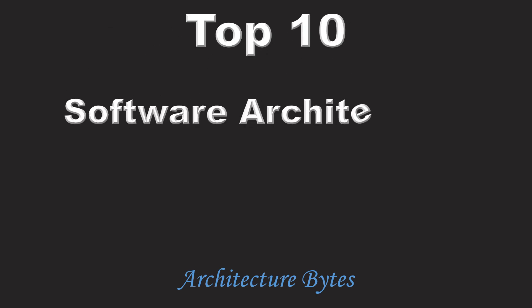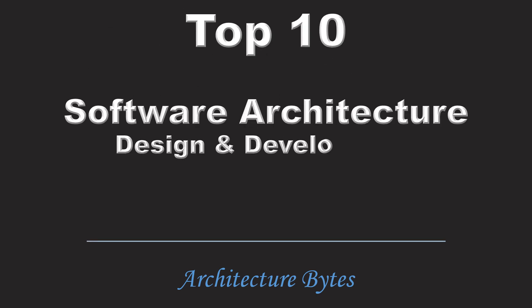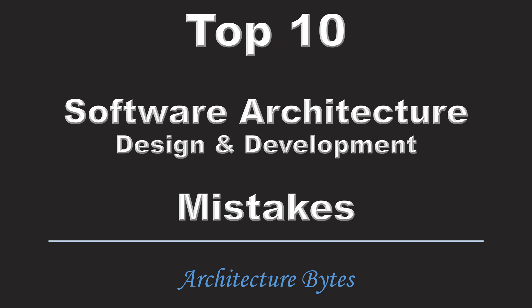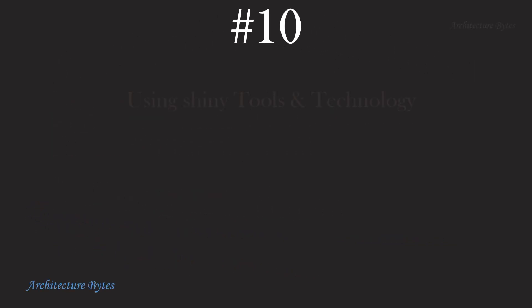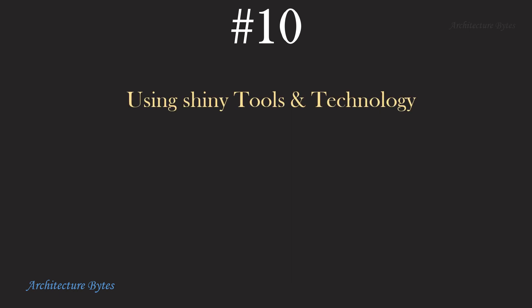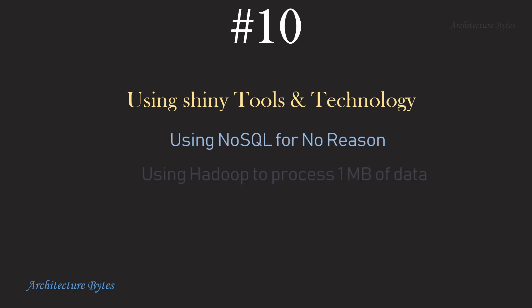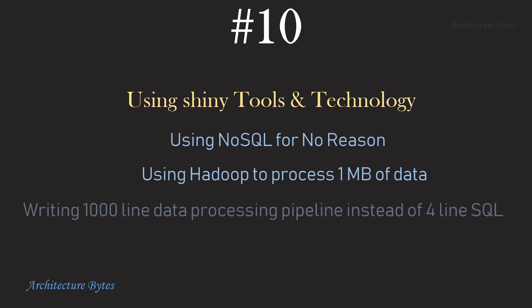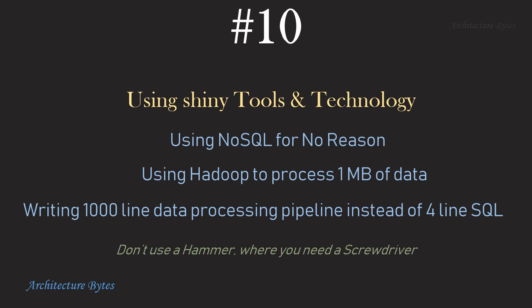Top 10 Software Architecture Design and Development Mistakes. At number 10: using shiny tools and technology instead of what you need. For example, using NoSQL for no reason, using Hadoop to process 1 MB of data, writing a 1000-line data processing pipeline instead of a 4-line SQL statement which will do the job. Essentially, don't use a hammer where you need a screwdriver.